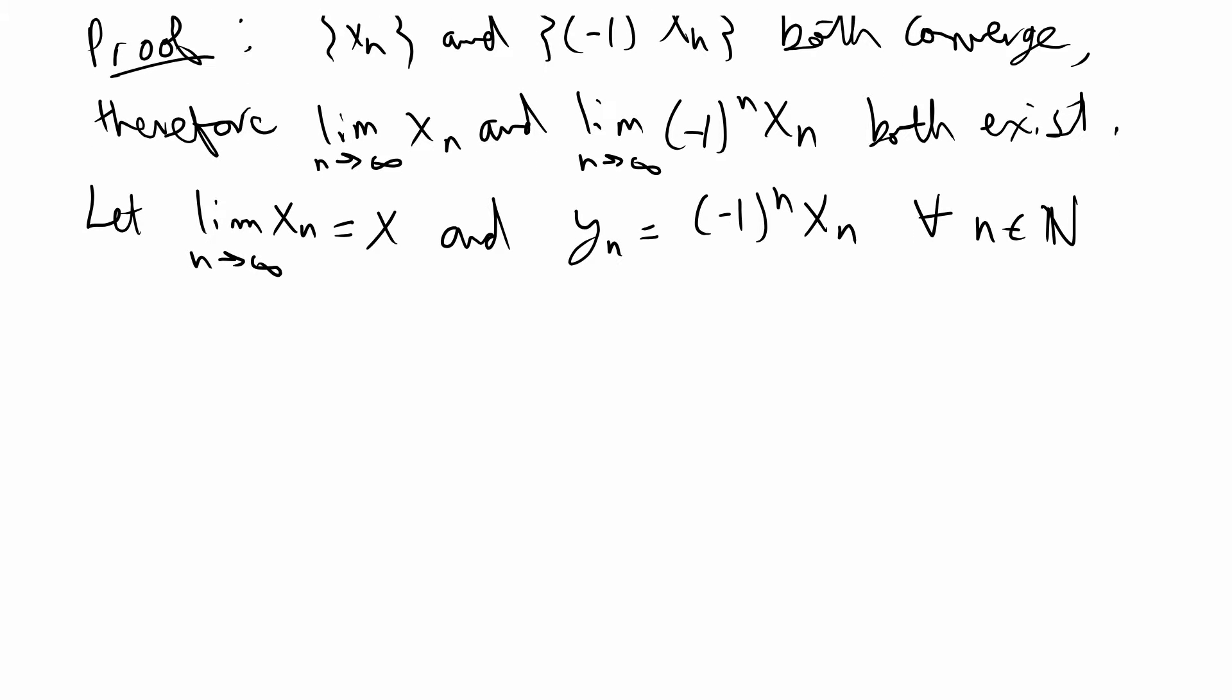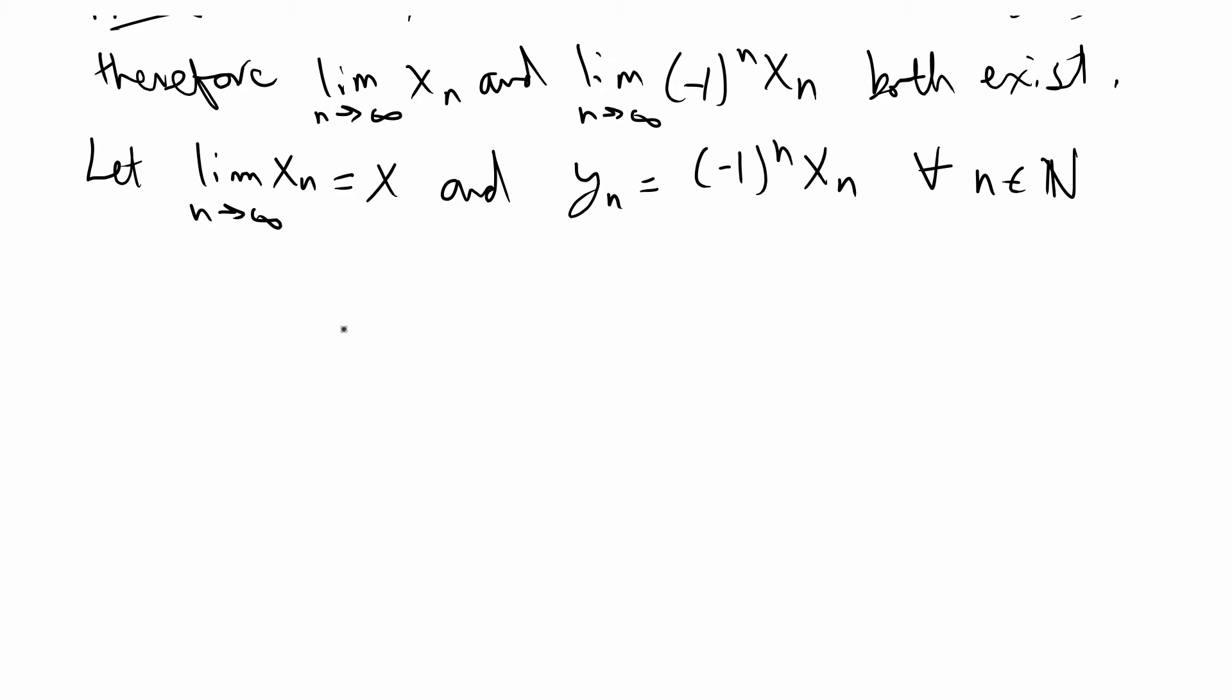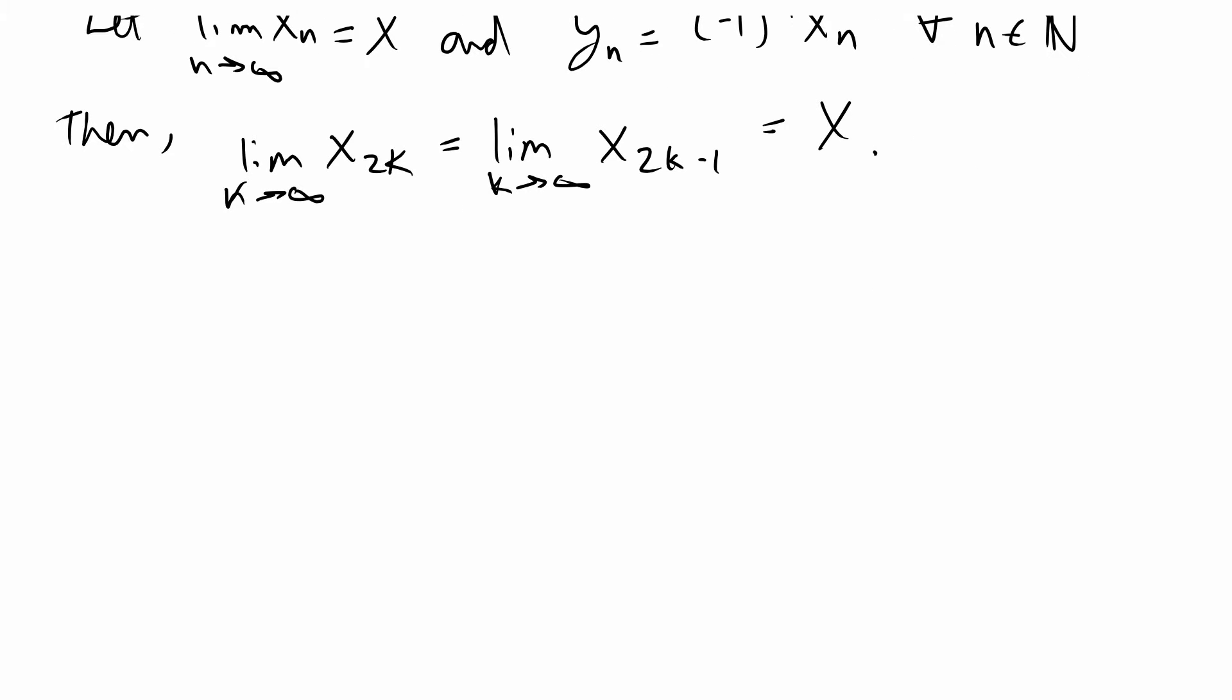Using that, we can say that all the odds and all the evens, subsequences of the sequence will converge. This is just saying 2k would be any even subsequence and 2k minus 1 would be any odd subsequence. Those both have to be the same limit and it has to be the same limit as the sequence, which is X.